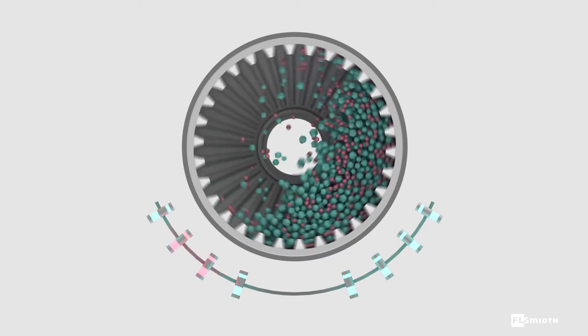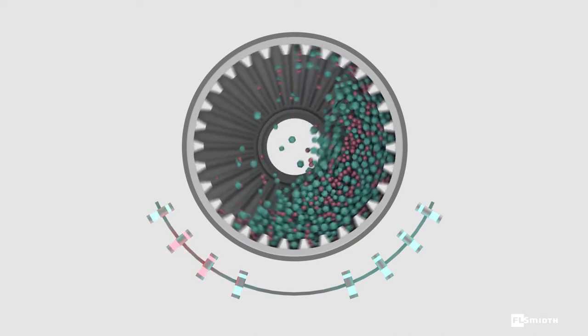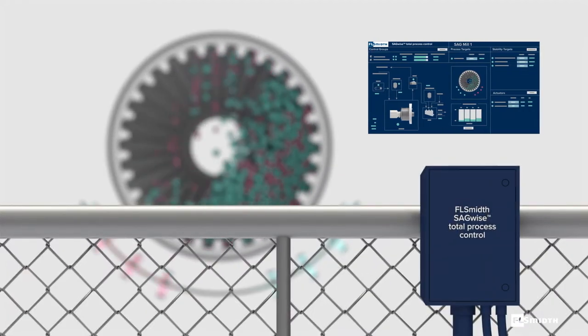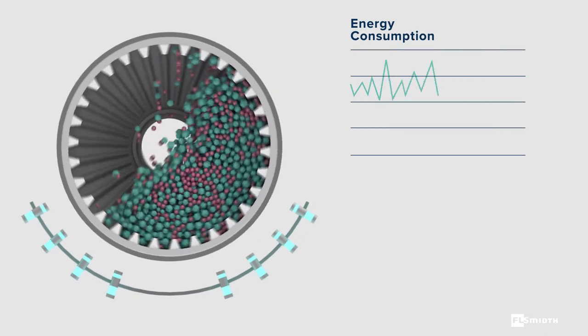First, audio sensors close to the sag mill listen for undesirable high energy critical impacts. Then, intelligent software analyzes the patterns and adjusts feed, speed, and pulp density for optimal efficiency.